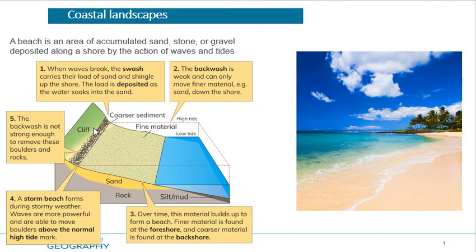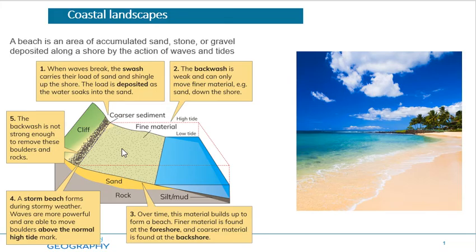Today we're going to look in detail at the formation of a beach and then some other small quick features that we have to be able to recognize as well. A beach is made by constructive waves — waves that have a quite strong swash but a quite weak backwash. The strong swash carries material onto the coast, and the weak backwash means the wave is not strong enough to carry the material back out, so it drops the material here.